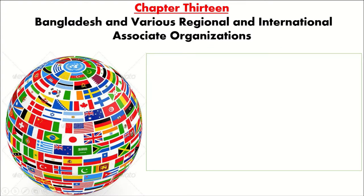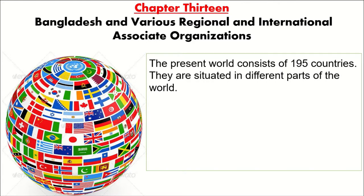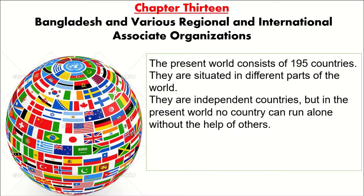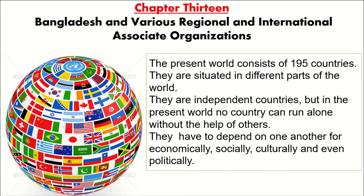Here you can see the different countries of the world. At present, there are 195 countries in the world and they are situated in different parts of the world. They are independent countries, but in the present world no country can run alone without the help of others. They have to depend on one another economically, socially, culturally, and even politically.